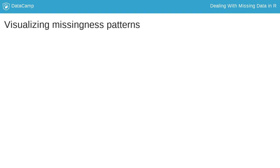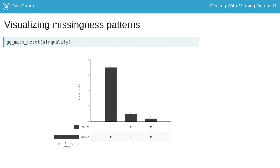To visualize the common combinations of missingness — which variables and cases go missing together — use gg-miss-upset. This powerful visualization shows the number of combinations of missing values that co-occur. An upset plot of the air quality dataset shows there are only missing values in ozone and solar.r, with 35 in only ozone, 5 in solar.r, and 2 missing cases in both ozone and solar.r.